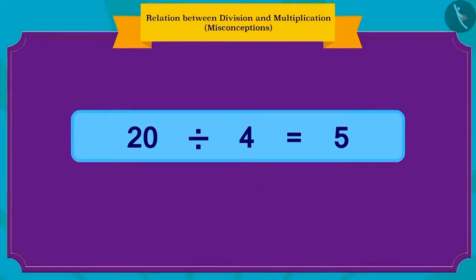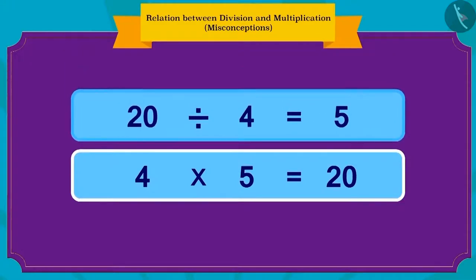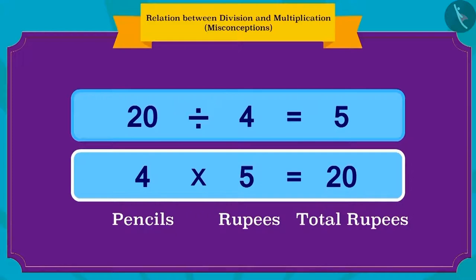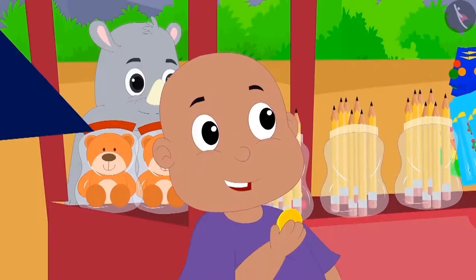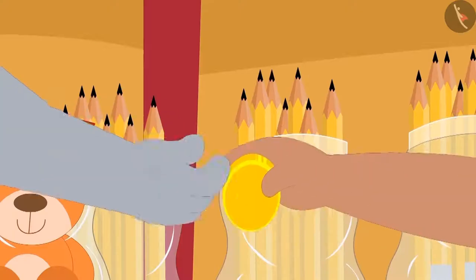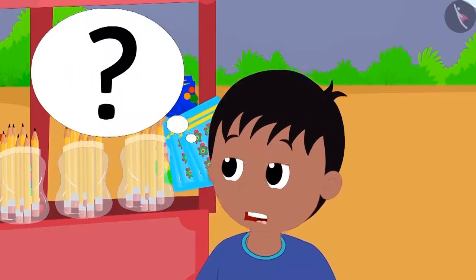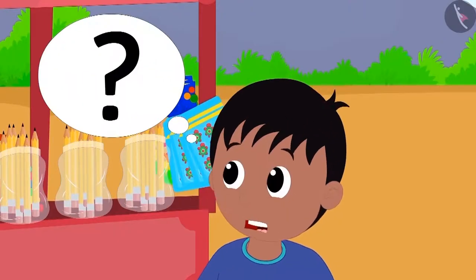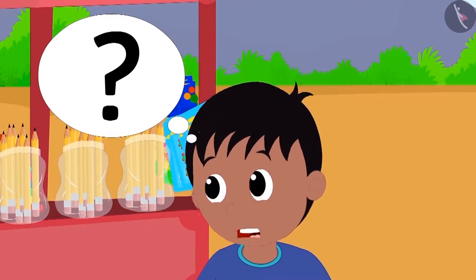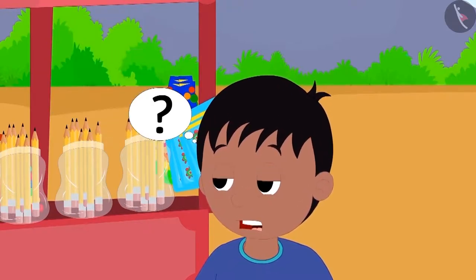Absolutely correct! This is the way in which we can write it in terms of multiplication. Four pencils, and each pencil costs 5 rupees, so the total is 20 rupees. Bablu quickly handed 5 rupees to Gagu and bought the pencil. Raju was amazed at how fast Bablu had calculated the answer.